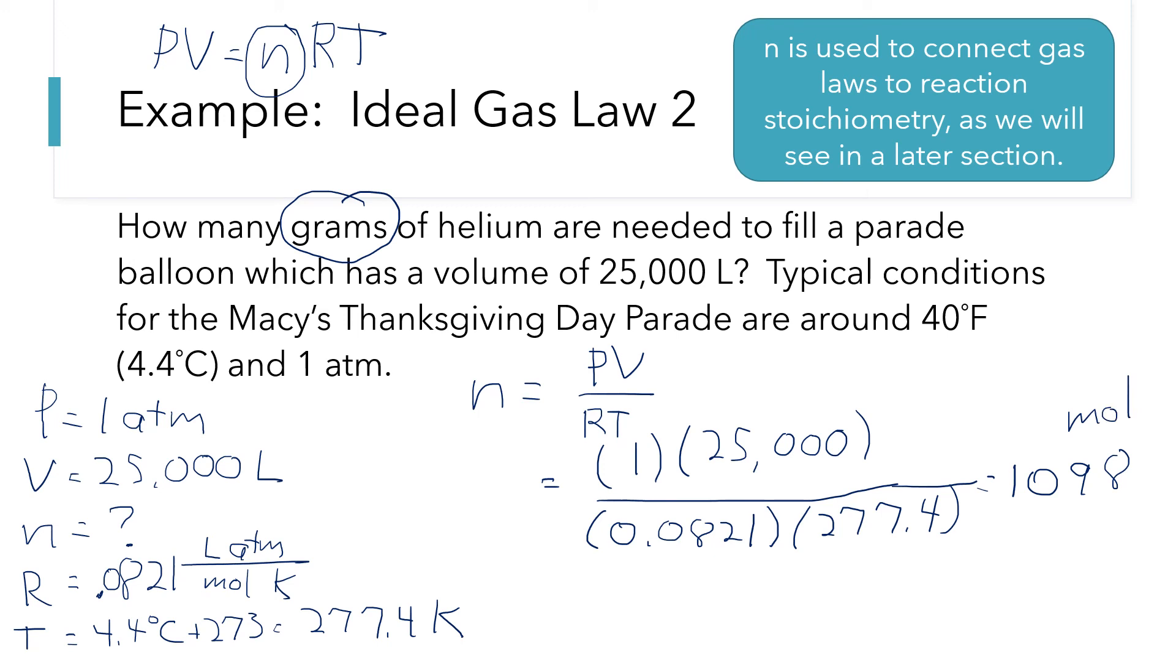Now I need to convert that to grams. Well, if I have 1098 moles of helium, radiation sign has the number one with moles and molar mass with grams and the molar mass for helium is about four grams. So if I take my 1098 and I multiply it by four,